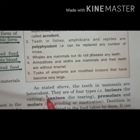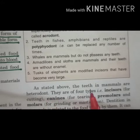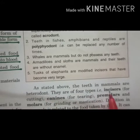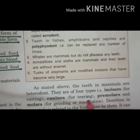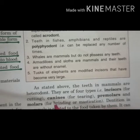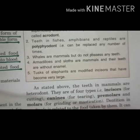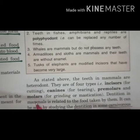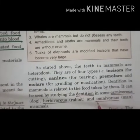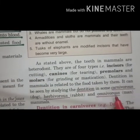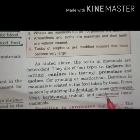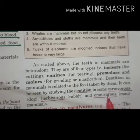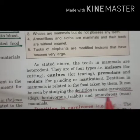The teeth in mammals are heterodont — different in structure and function. There are four main types of teeth: incisors, canines, premolars, and molars. Dentition is different in carnivores, herbivores, and omnivores.